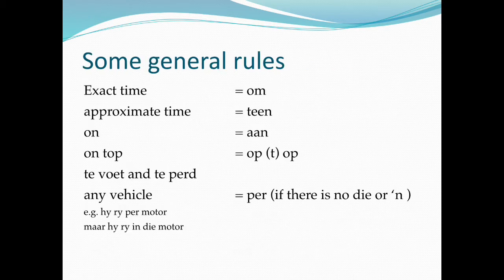Some general rules. The exact time equals 'om'. Approximate time equals 'teen'. 'On' equals 'aan'. 'On top' equals 'op'. Any vehicles equals 'per', if there is no 'die' or 'n'. For example, 'hy ry per motor', but 'hy ry in die motor'.